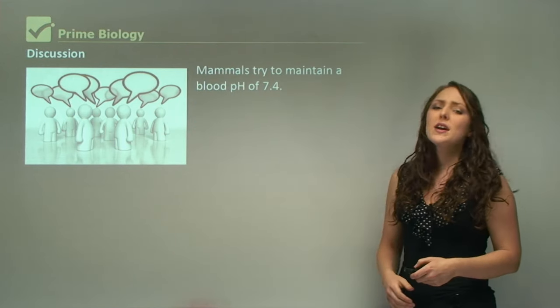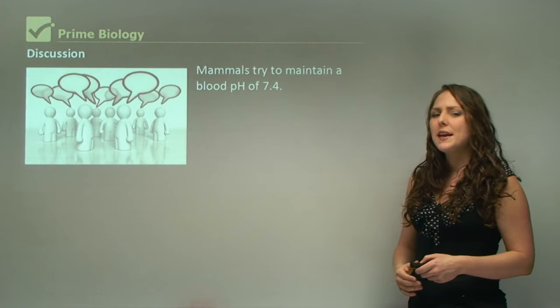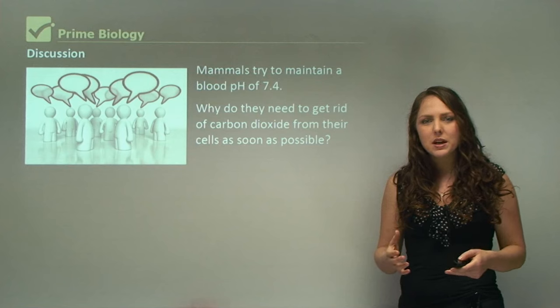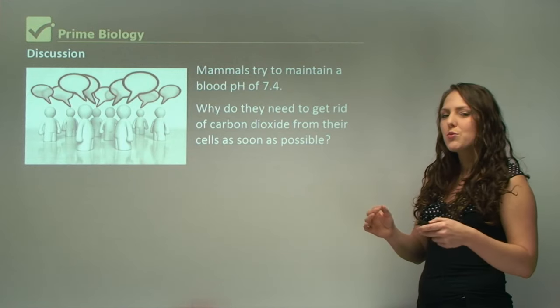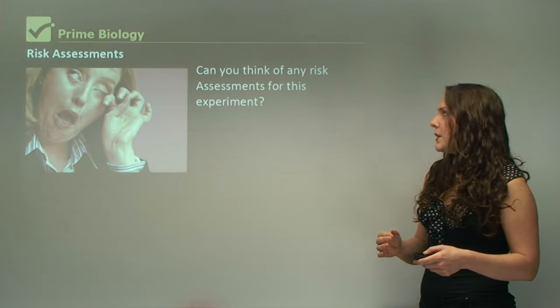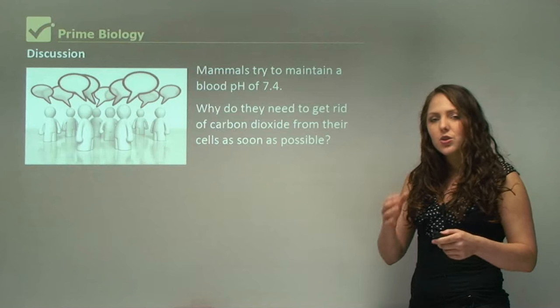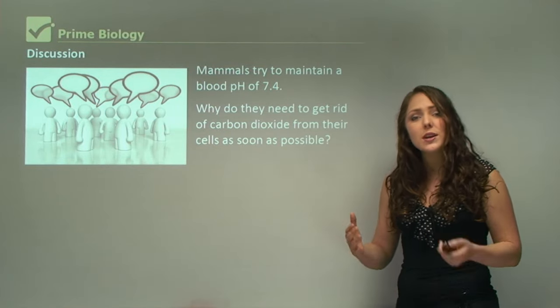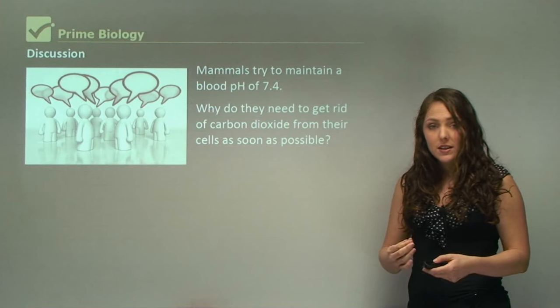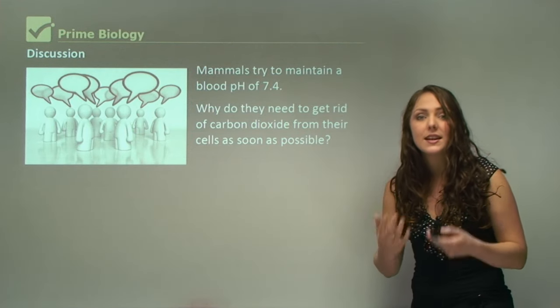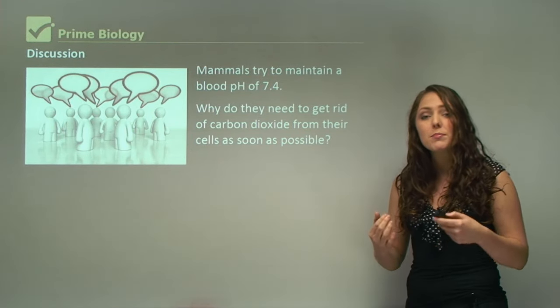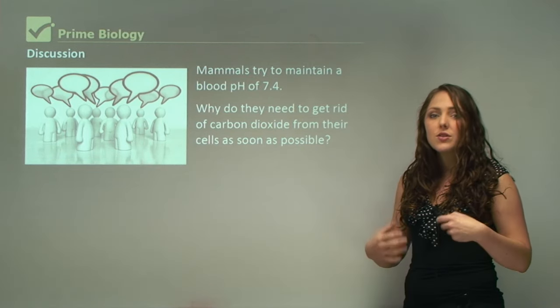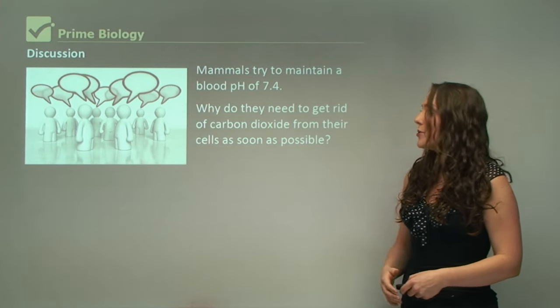Mammals try to maintain a blood pH of 7.4. Why do you think we need to maintain this blood pH of 7.4? The reason is because carbon dioxide in your blood makes your blood more acidic. If you weren't to breathe and get rid of excess carbon dioxide, it would make your blood more acidic, which is very toxic to our body. That's why we need to breathe and get rid of carbon dioxide.